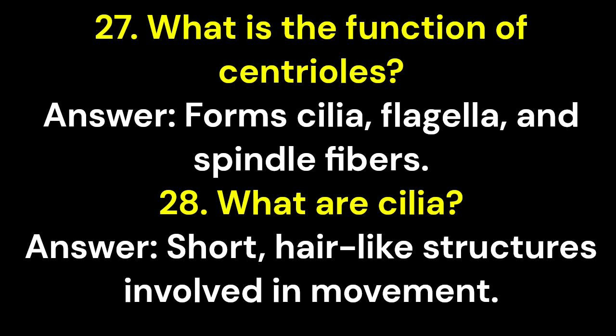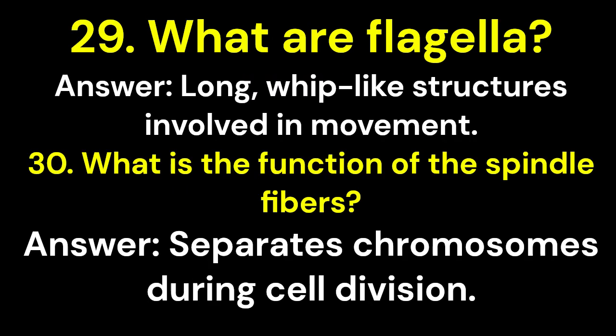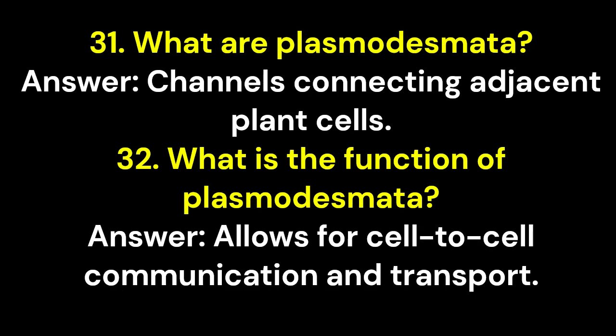28. What are cilia? Answer: Short, hair-like structures involved in movement. 29. What are flagella? Answer: Long, whip-like structures involved in movement. 30. What is the function of the spindle fibers? Answer: Separates chromosomes during cell division. 31. What are plasmodesmata? Answer: Channels connecting adjacent plant cells. 32. What is the function of plasmodesmata? Answer: Allows for cell-to-cell communication and transport.